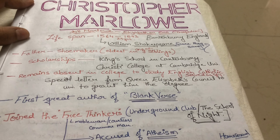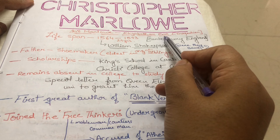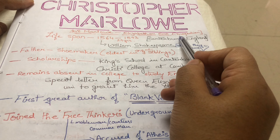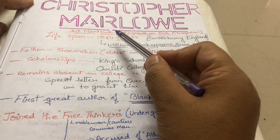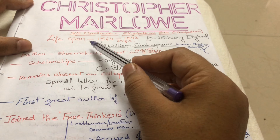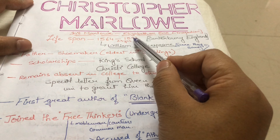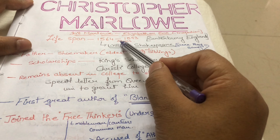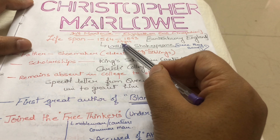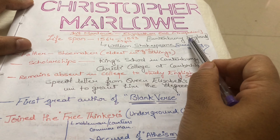Christopher Marlowe belonged to the Elizabethan era and he was a tragedian, meaning he wrote tragedy. His pet name was Kit Marlowe. His lifespan was 1564 to 1593, meaning he had a very short lifespan of only 29 years. He was born in Canterbury, England.